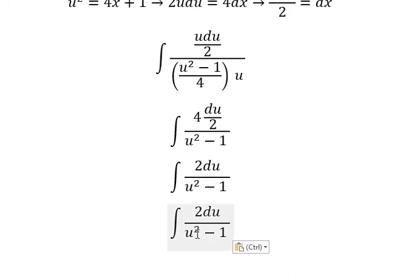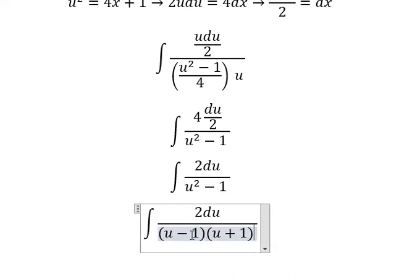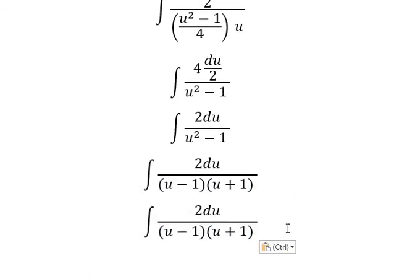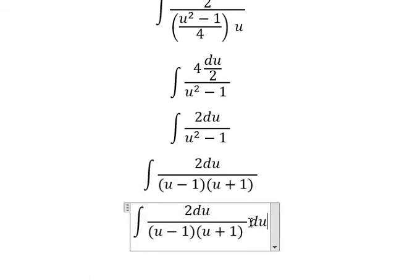So we know that u squared minus 1 we have u minus 1 multiplied by u plus 1. This is about identities. We know that number 2 that's 1 plus 1.